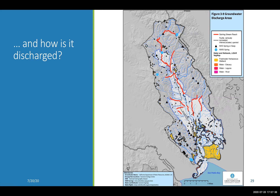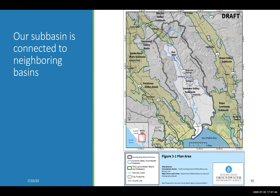Groundwater can also be exchanged underground with neighboring basins where they are connected. For example, groundwater generally flows into the basin from the Kenwood Basin to the north. The groundwater aquifers within the sub-basin are also connected with aquifers in the volcanic rocks that border the basin — a natural connection that the GSA needs to understand and incorporate into the GSP being prepared for the Sonoma Valley sub-basin.